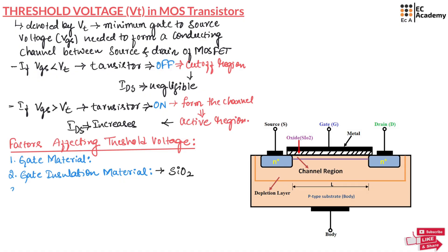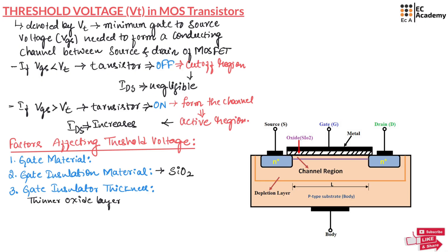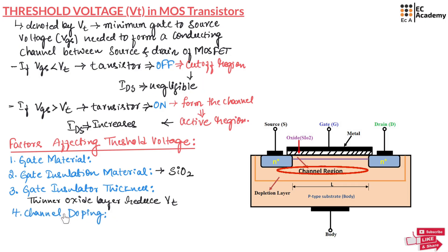The next factor is gate insulator thickness. A thinner oxide layer will produce a stronger electric field, which will reduce the required threshold voltage. The next factor is channel doping. A higher doping concentration in the channel will increase the threshold voltage.